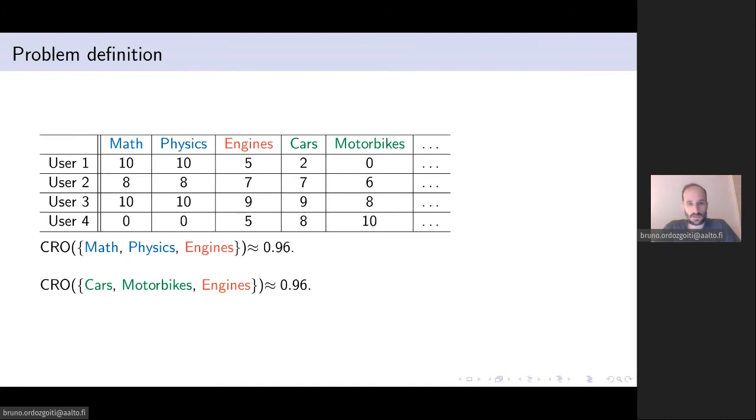If we go back to our initial example we see that the sets that we discussed do indeed score reasonably high in this CRO measure. So this indicates that it might be a good method for finding these types of sets.